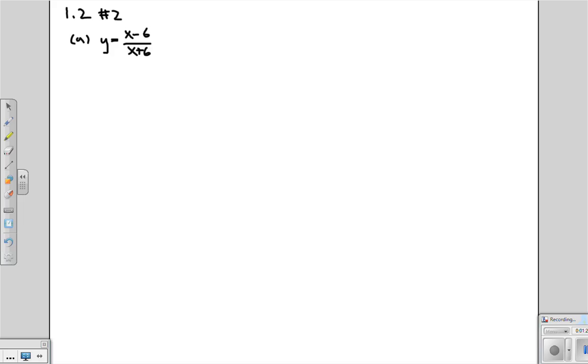But if it isn't, then we can still say it's an algebraic function. Look at the top portion. Is that a polynomial, x minus 6? Yes, it is. The bottom, is x plus 6 a polynomial? Yes, it is. So that means this is a ratio of not just any two functions, but specifically, it's a ratio of polynomials, which means we can say that this is a rational function.